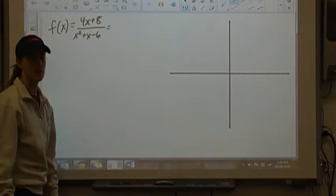Nothing's going to cancel here, so we don't have any holes in our graph. Our horizontal asymptote, we have bottom heavy with degree of the numerator is 1, denominator is 2, so then automatically y is going to be equal to 0.